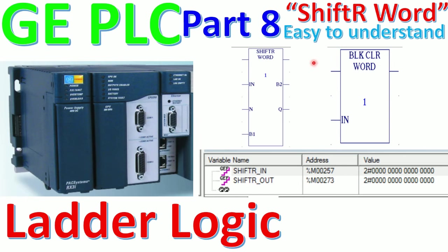So today we will continue to shift right word — it is part 8. It's not so different from shift left. One word has 16 bits also, and it will shift from right to left, which is the opposite of shift left. Here is an example.